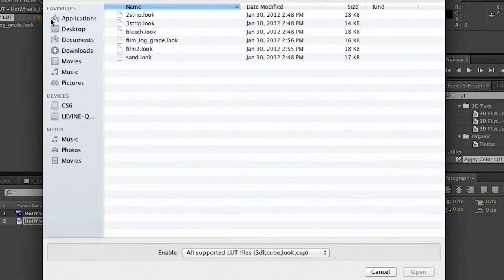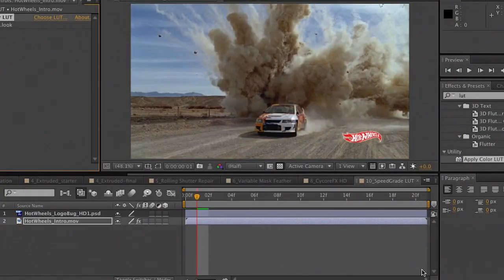If you want to add a different LUT, a different look, let's go to something like a 3-strip, click OK, RAM preview, and it's done. Great new features, incredible performance, incredible enhancements to really speed up your workflow. Those are just some of the new things in the incredible After Effects CS6.